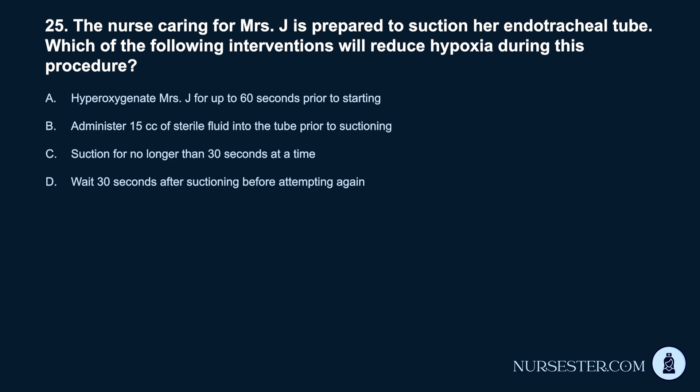Question 25. The nurse caring for Mrs. J. is prepared to suction her endotracheal tube. Which of the following interventions will reduce hypoxia during this procedure? A. Hyperoxygenate Mrs. J. for up to 60 seconds prior to starting. B. Administer 15 cubic centimeters of sterile fluid into the tube prior to suctioning. C. Suction for no longer than 30 seconds at a time. D. Wait 30 seconds after suctioning before attempting again.